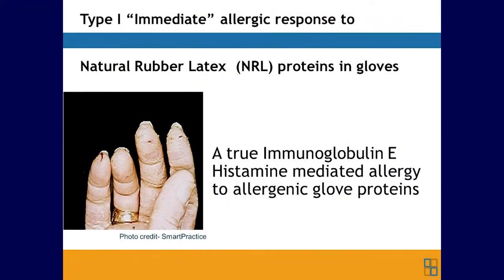Type 1 immediate allergic reaction is considered a true immunoglobulin E histamine-mediated allergy to allergenic glove proteins. Type 1 allergic response is potentially the most serious type of reaction. It can involve local or systemic symptoms. Localized reactions occur at the site of exposure — for example, hives at the area of contact. Allergic rhinoconjunctivitis and asthma following exposure to airborne allergens are also localized reactions. Generalized reactions occur at sites distant from the site of exposure, such as asthma after a skin exposure.